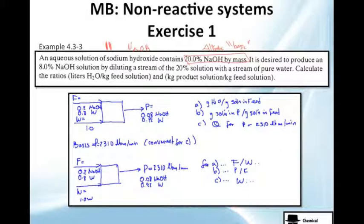And because of that, we want to produce an 8%, only 8% solution by diluting with another stream of 20% solution of pure water. Now, they asked me to calculate the ratio in liters per kilogram feed and the kilograms of solution per kilogram of solution in the feed.